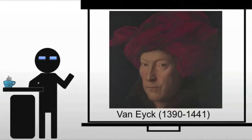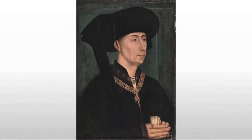Jan van Eyck is going to be one of the major artists of the northern European 15th century. He is court painter to Philip the Good, Duke of Burgundy — no relation to Ron of Burgundy — and he will take advantage of oil paints throughout his career.